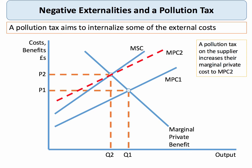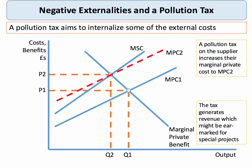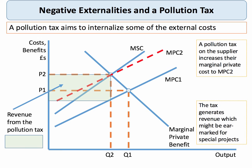A pollution tax increases the marginal private cost to MPC2. The scale of the tax is shown by the vertical distance between these two cost curves. In theory, that should lift the private cost of production and cause a contraction of demand to Q2, helping to correct for the market failure. The tax is also going to create some revenue — the revenue is the tax per unit multiplied by the quantity Q2. That's how a pollution tax in theory works: it increases the marginal private cost of the producer and encourages output to contract to Q2 where we take into account the external costs, and as a side effect we create some revenue.